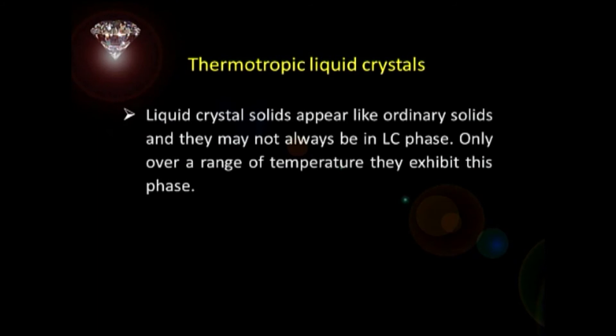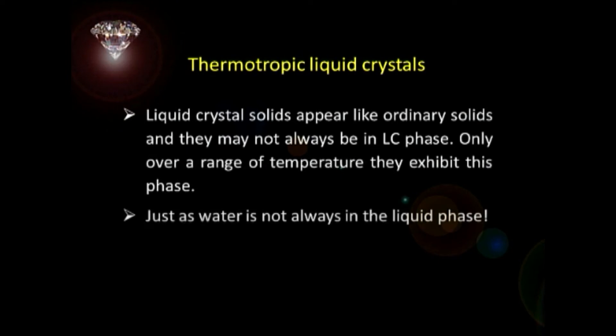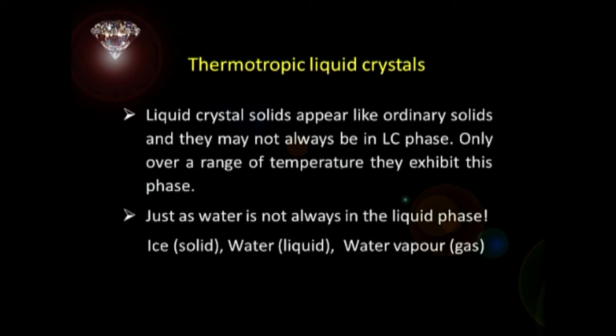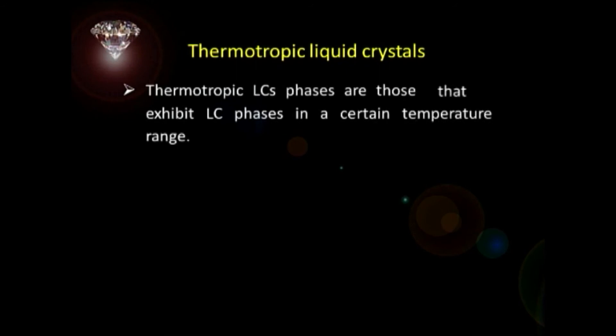Whereas lyotropic liquid crystals are different — they show the transition as a function of concentration in a solvent like water or any organic solvent. Let us first look at thermotropic liquid crystals. Liquid crystal materials are like ordinary solids — they may not be in the liquid crystalline phase always. Only over a certain range of temperature do they exhibit this interesting liquid crystalline phase. Thermotropic liquid crystal phases exhibit LC phases as a function of temperature over a certain range.